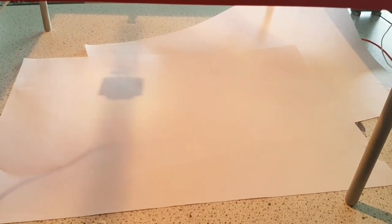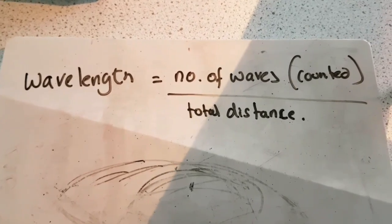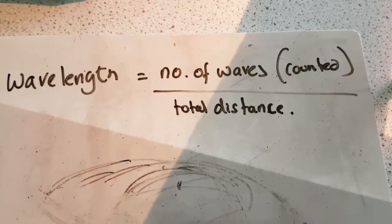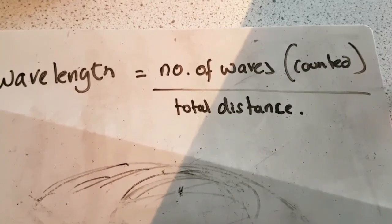And that is all you have to do. Very simple. So there is that equation that you need to do. Wavelength is equal to the number of waves that you counted, divided by the total distance that you measured using the ruler.